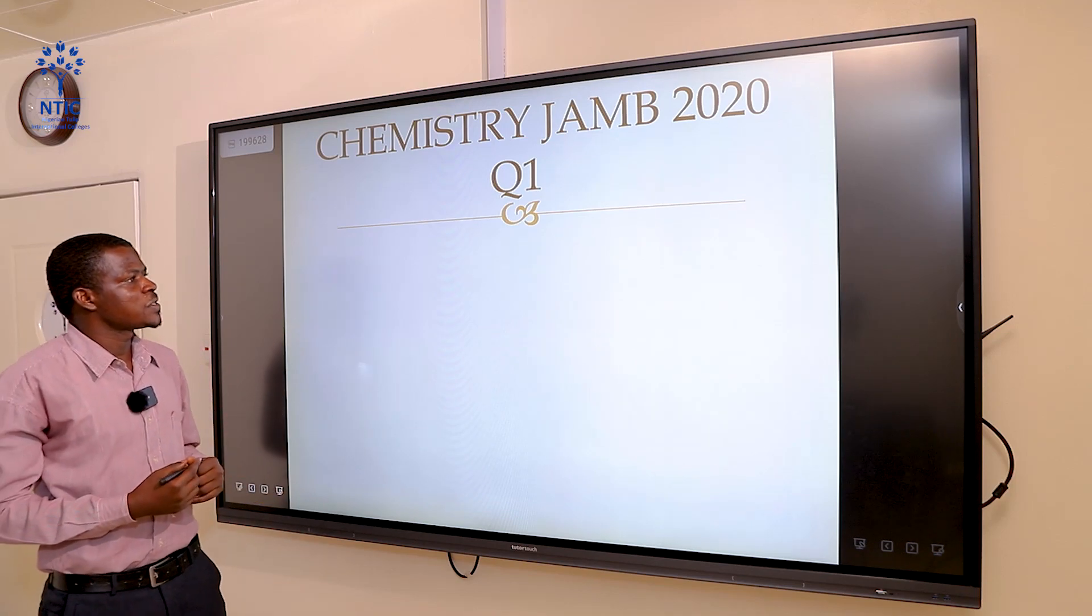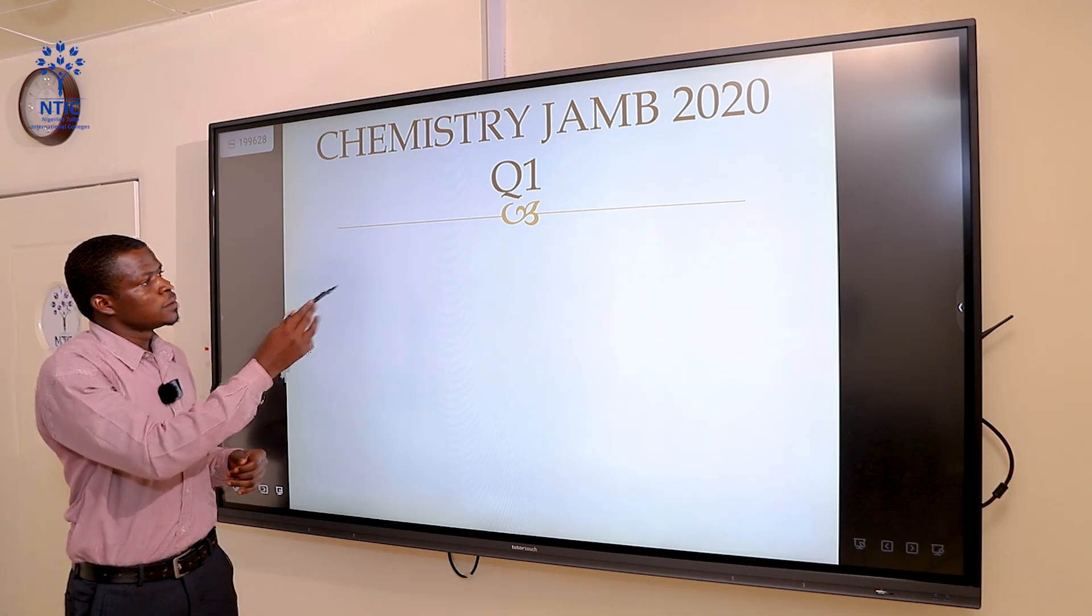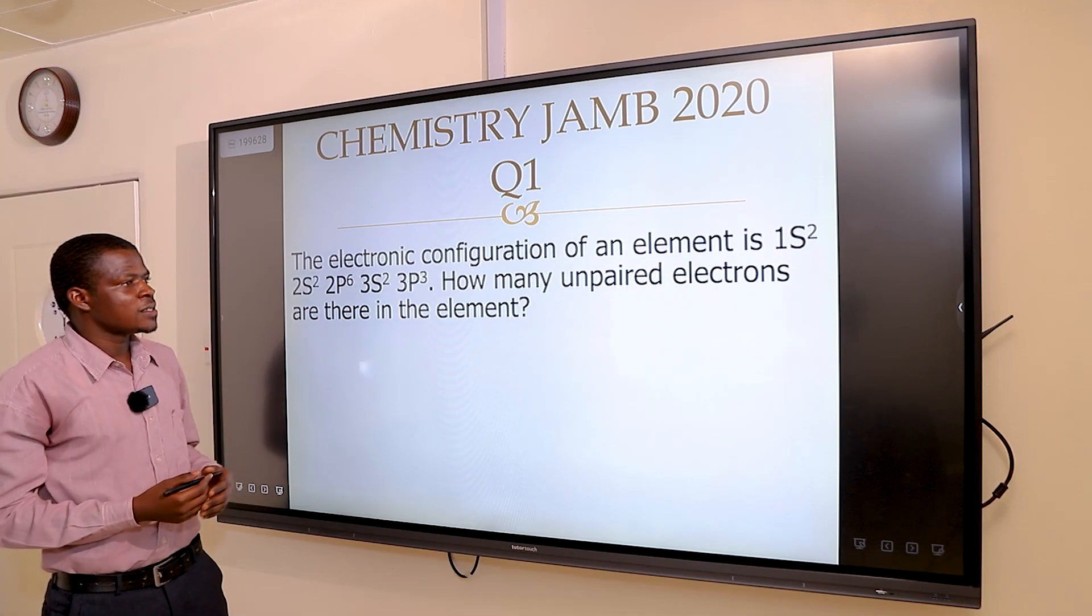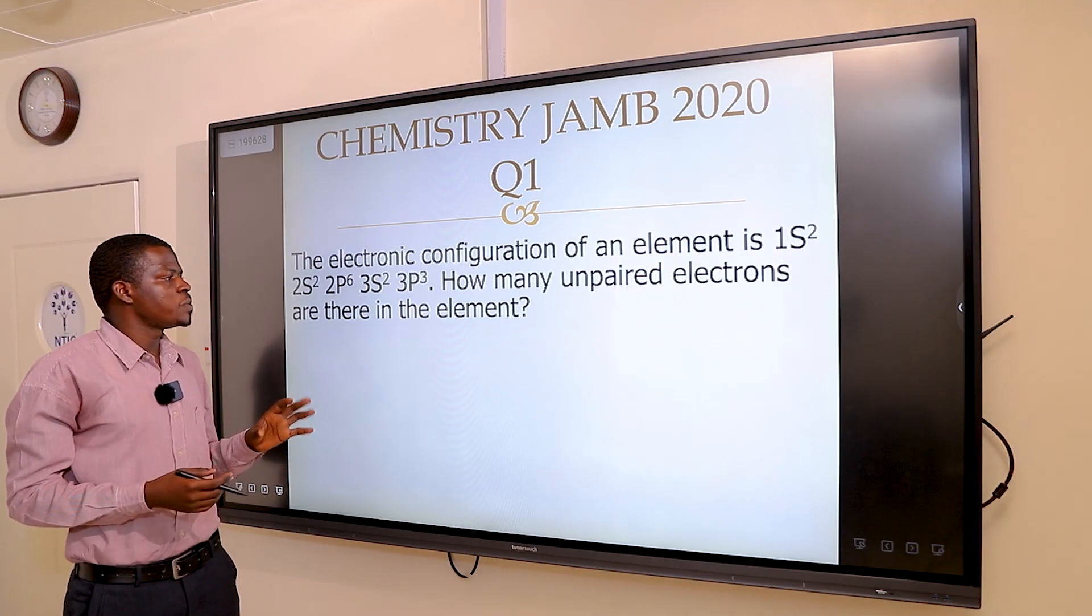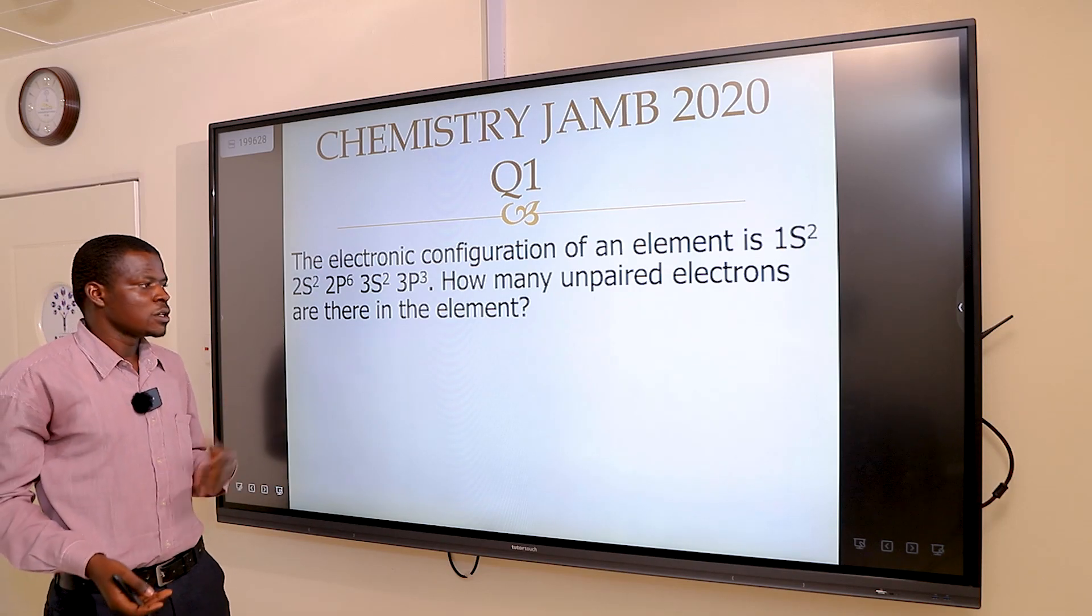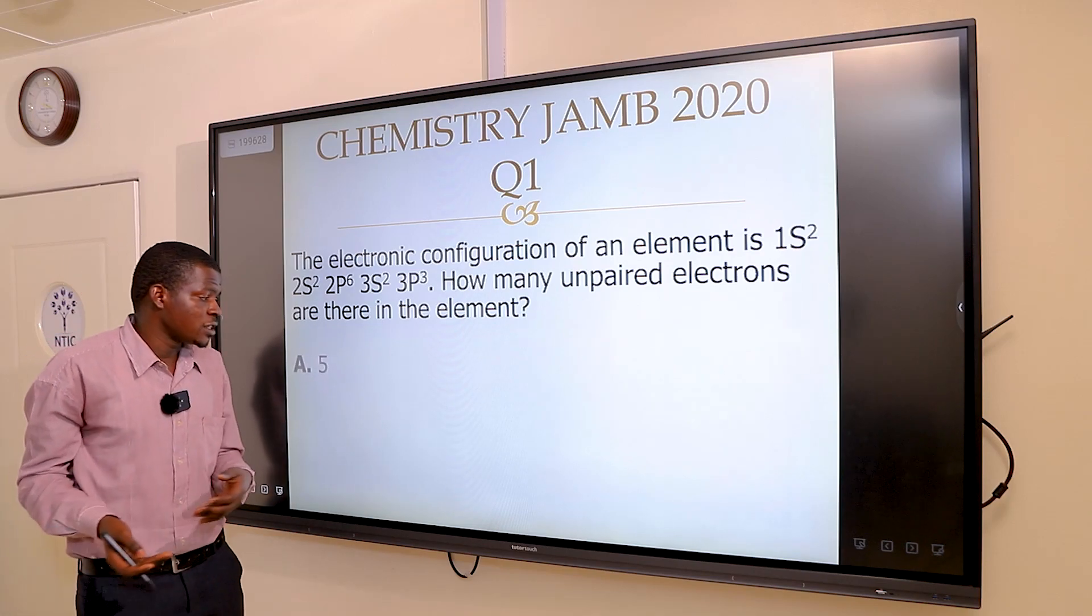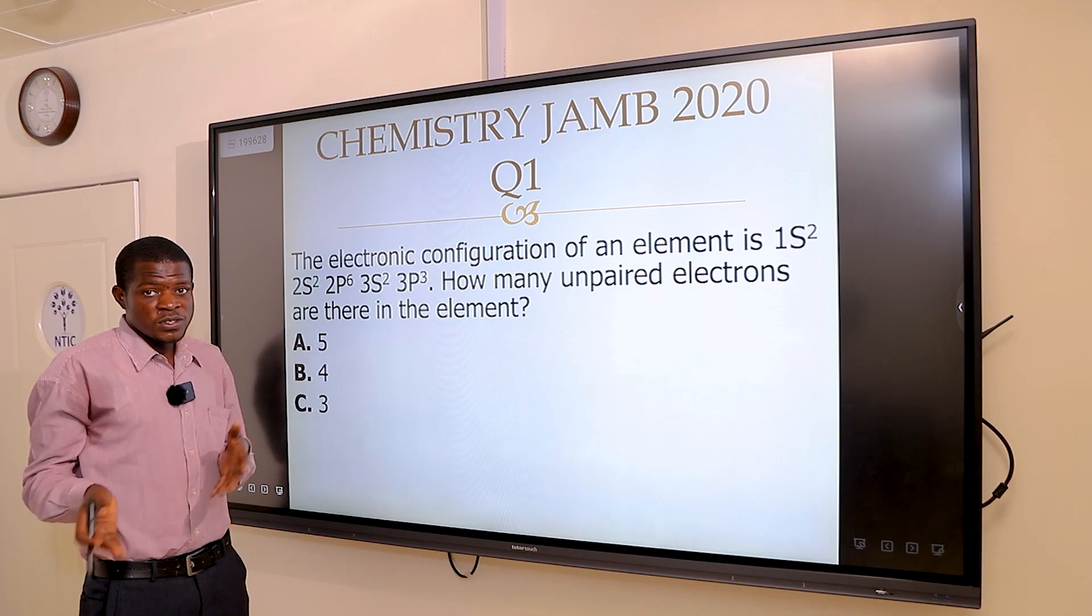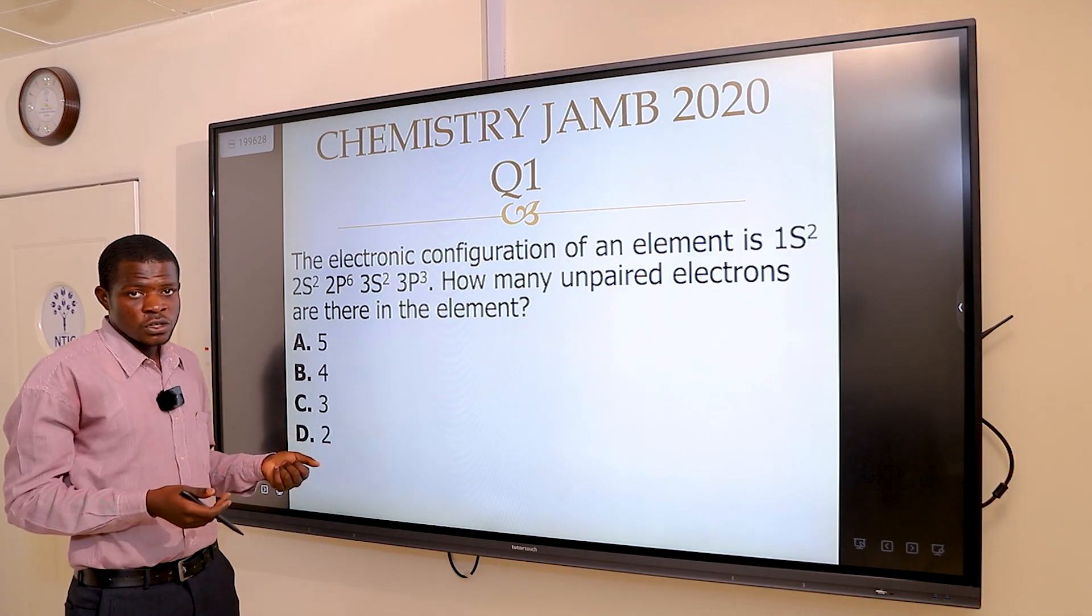The first question says: the electronic configuration of an element is 1s2, 2s2, 2p6, 3s2, 3p3. How many unpaired electrons are there in the element? The options are: A says 5, B says 4, C says 3, and D says 2.